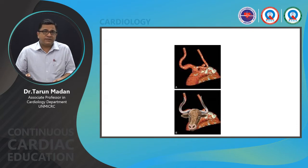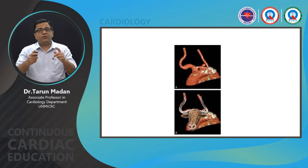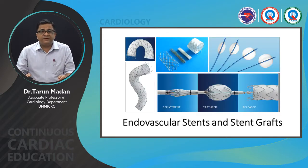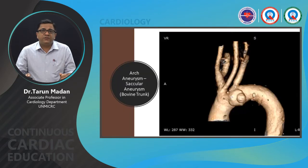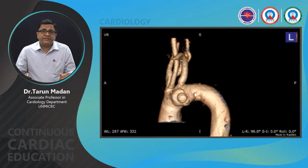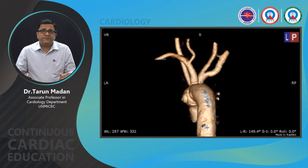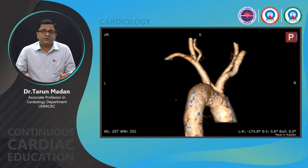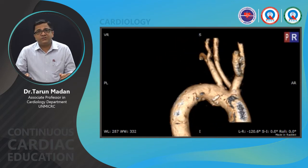The bovine arch is named because it resembles the horns of a bovine — the innominate and left common carotid artery arise as two horns. Self-expanding covered stent grafts are used to manage aneurysm pathology. An interesting case involves a distal arch aneurysm where a patient had hoarseness of voice due to compression of the left recurrent laryngeal nerve.